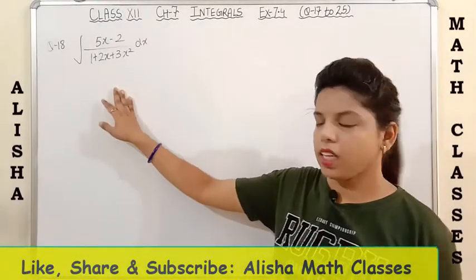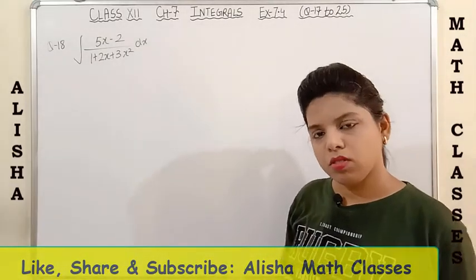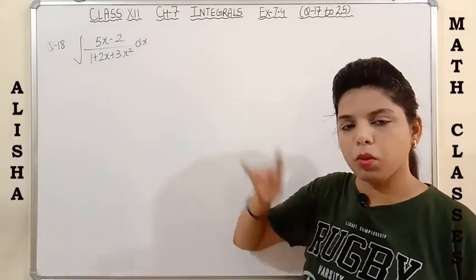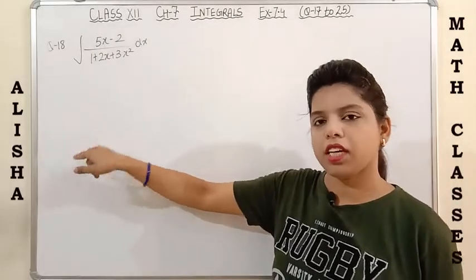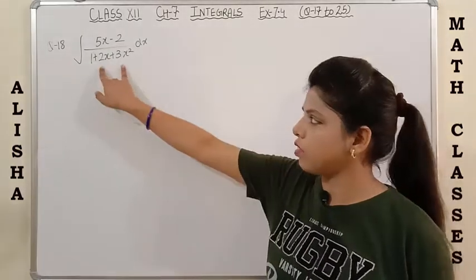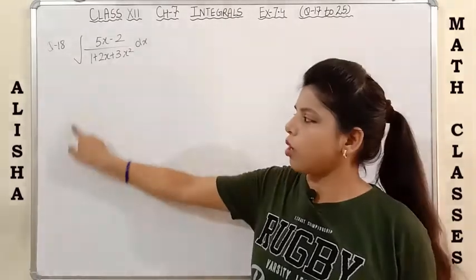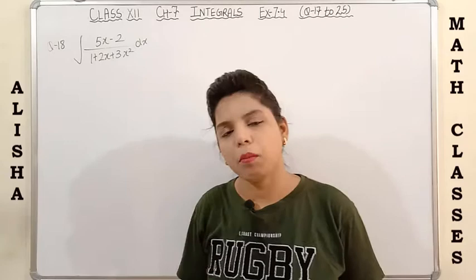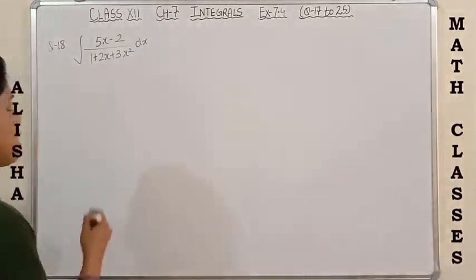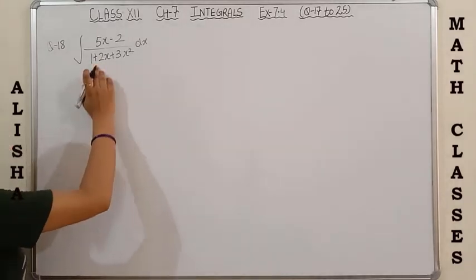Next is question 18: integration of (5x-2) upon (1+2x+3x²). This is similar — linear in numerator, quadratic in denominator. However, the derivative of the denominator is 6x+2, and if we separate, we cannot get 6x+2 in the numerator directly from 5x-2. So we use the method for linear upon quadratic form, following the steps from the introduction video.